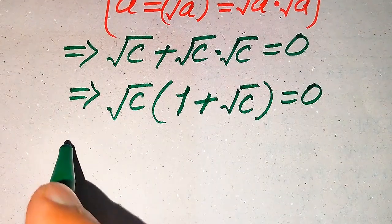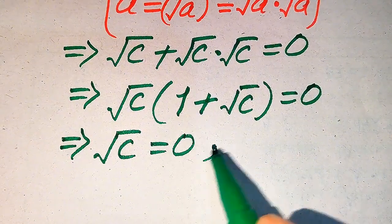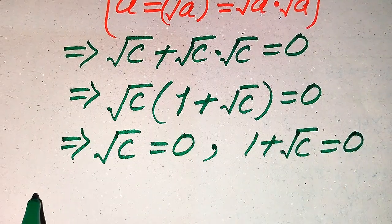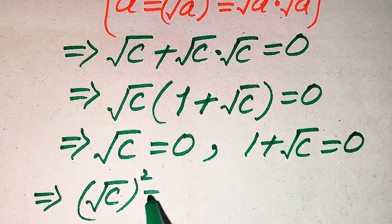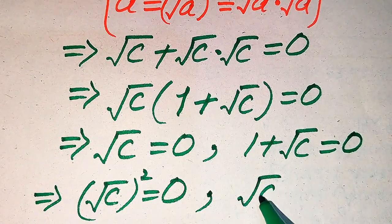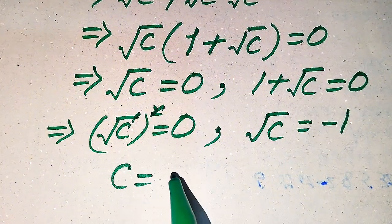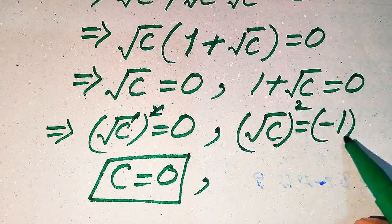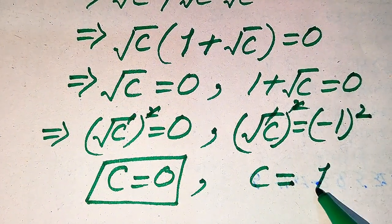We divide this equation into two cases. Case one: square root of C equals 0; squaring both sides gives C equals 0. Case two: 1 plus square root of C equals 0; moving 1 to the right gives square root of C equals minus 1; squaring gives C equals (−1)² equals 1.